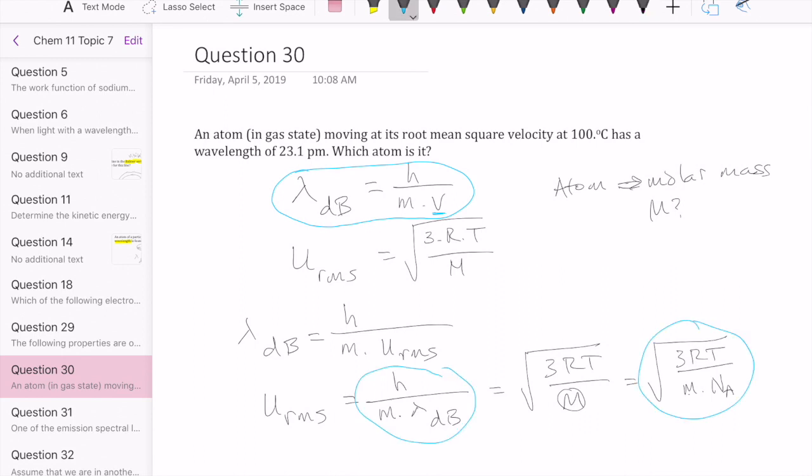I'll just put out the things that we know already. Planck's constant, of course, we know. The lambda is given in the question 23.1 picometer. Gas constant, we know. Temperature is also given in the question 100 degrees Celsius. Avogadro's number we know. So the only thing that we don't know in this question is M.